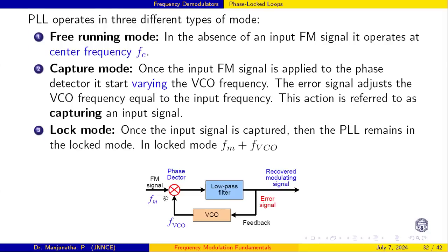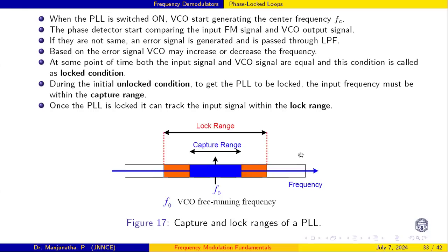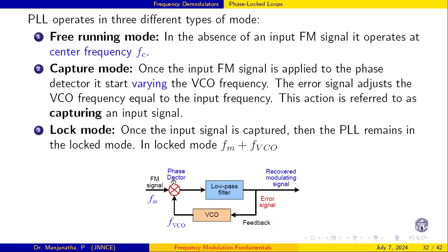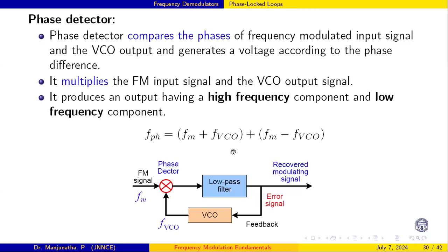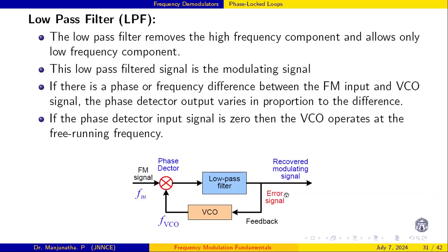This action is referred to as capturing the input. Once the input signal is captured, the PLL remains in lock mode. In lock mode, FM equals f-VCO — both are the same. The FM signal and VCO output are compared, producing high and low frequency components. The filter passes the low frequency component, and any increase or decrease in frequency is tracked. In this way the PLL generates the demodulated output signal.